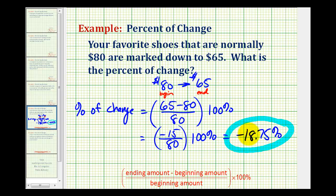This is negative because it tells us that this is a decrease of 18.75 percent. Notice how the price went from $80 to $65, which is a decrease. If this was a positive value, it would represent a percent of increase.